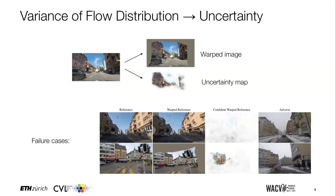The predicted variance of the flow distribution serves as a proxy for the prediction uncertainty. In the end we obtain both a flow prediction and the corresponding uncertainty map, as shown at the top. This is important because it allows us to block out inaccurate warpings, as shown below.